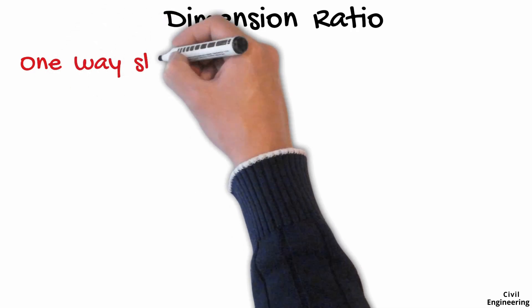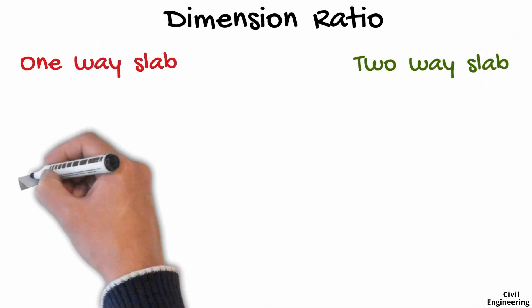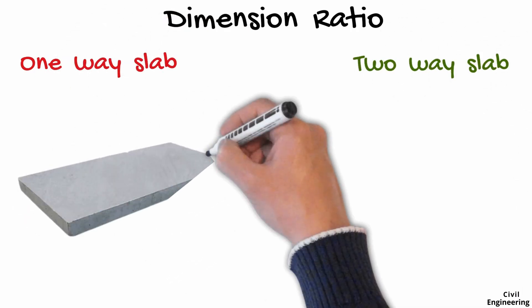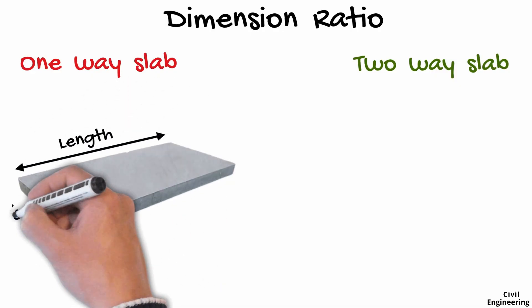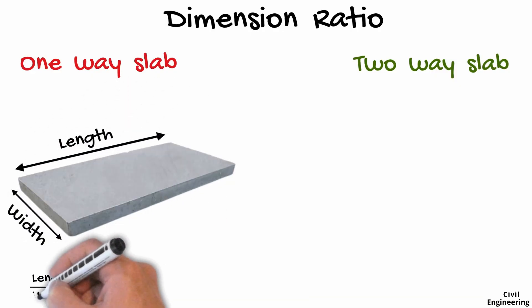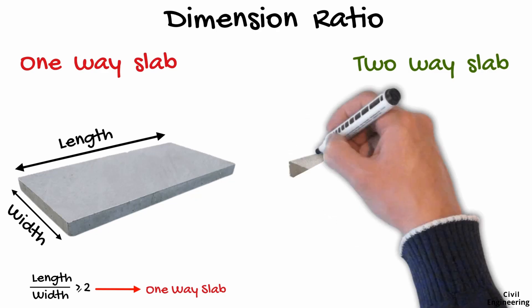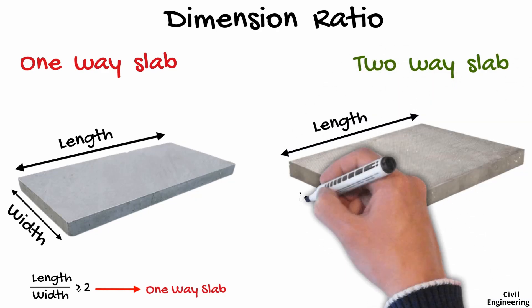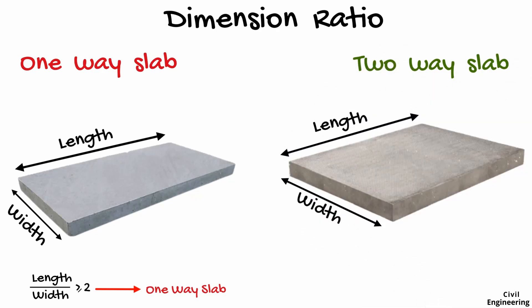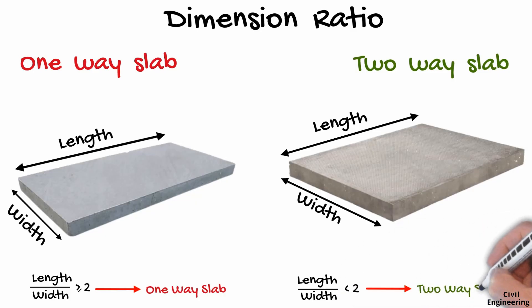The main difference between one-way slab and two-way slab is their dimension ratio. When the ratio of the length to the width of the slab is greater than or equal to two, it is known as a one-way slab. On the other hand, when this ratio is less than two, it is known as a two-way slab.